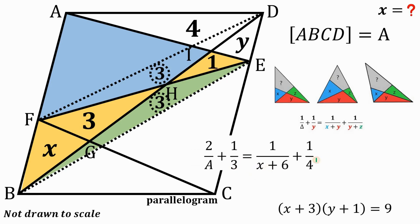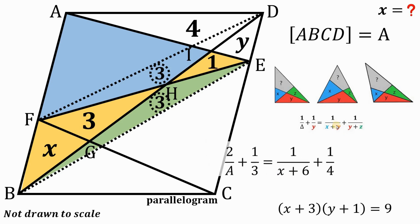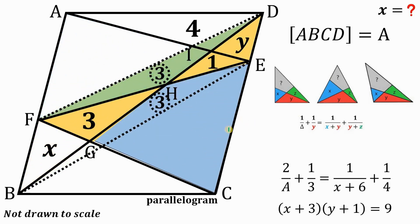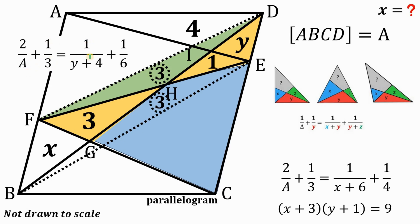Let's set this aside and consider another triangle, again applying the ladder theorem. We get: 2 over A plus 1 over 3 equals 1 over (Y + 1 + 3 + 3) plus 1 over (3 + 3). That is, 1 over (Y + 4) plus 1 over 6. We now have three equations, and the goal is to find the value of X.